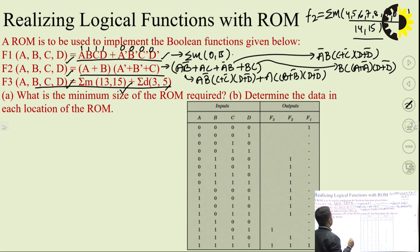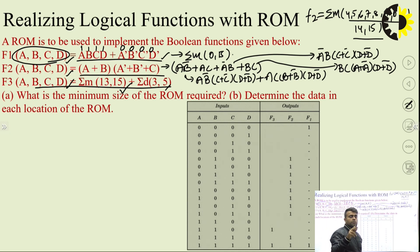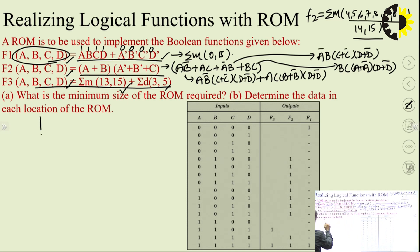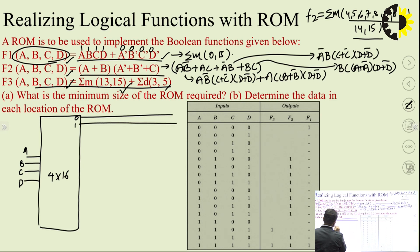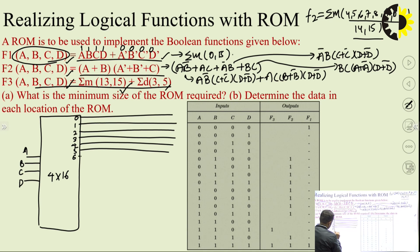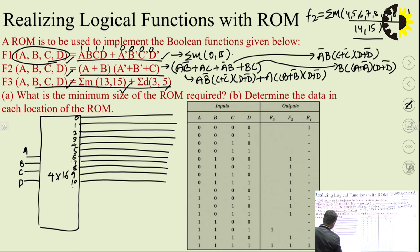For this system with 4 inputs (A, B, C, D), the decoder size will be 4×16, since 2^4 = 16. Taking a 4×16 decoder with inputs A, B, C, D and outputs 0 through 15. We draw three vertical OR gate lines for the three outputs F1, F2, F3.